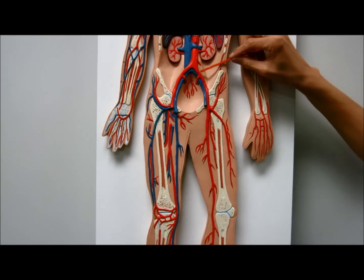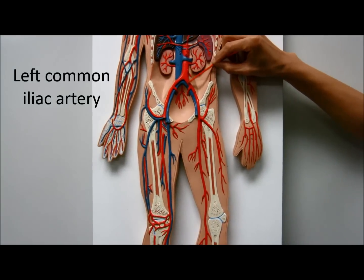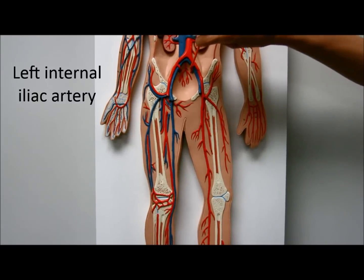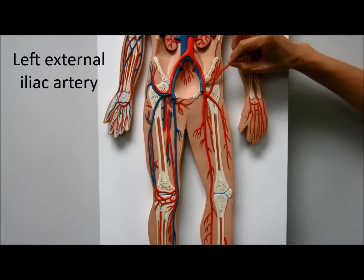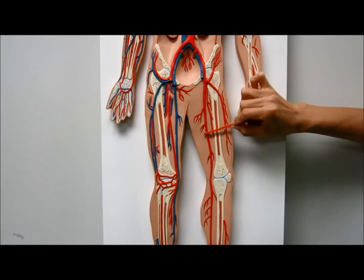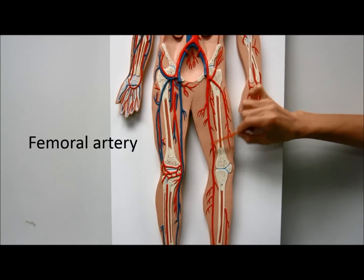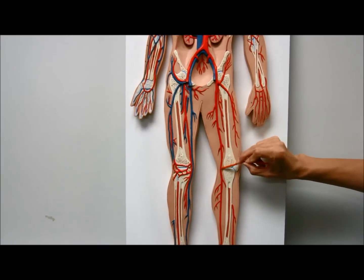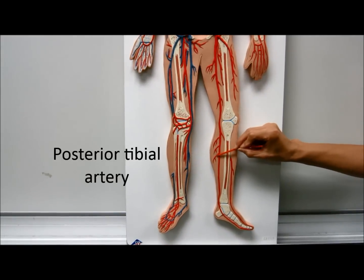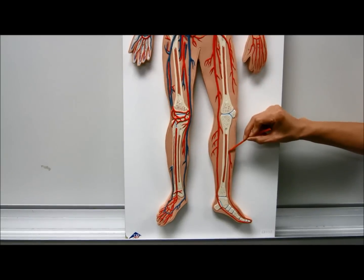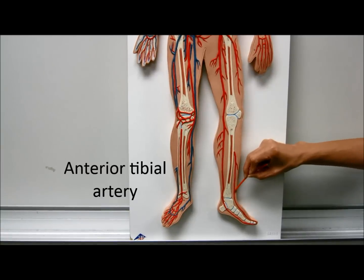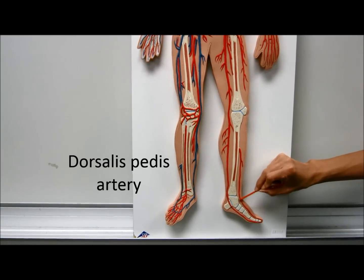The left common iliac artery branches to become the left internal iliac artery and the left external iliac artery. When the artery runs along the femur, it is called the femoral artery. The part behind your knee is called the popliteal artery. Then it branches to become the posterior tibial artery, and the other branch going anteriorly is called the anterior tibial artery. At the foot, this is called the dorsalis pedis artery.